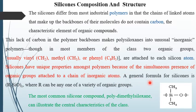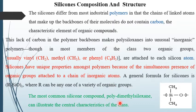A general formula for silicones is R₂SiOₓ, where R can be any of a variety of organic groups. The most common silicone compound, polydimethylsiloxane, can illustrate the central characteristics of the class.